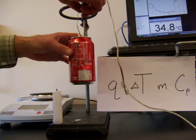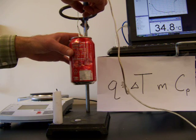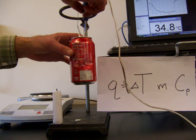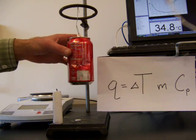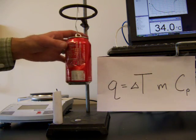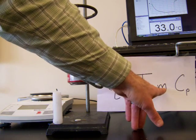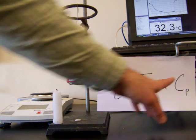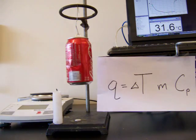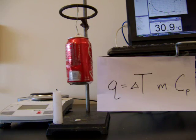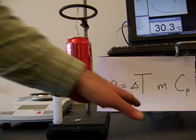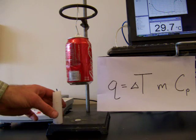Looks like our final temperature, 34.8 degrees Celsius is our final temperature of the water. So you can take the difference between the initial and final temperature of the water to figure out the temperature change. The mass is the mass of the water which was 100 grams and then the specific heat of water is 4.184 joules per gram degree Celsius. You can do that to figure out how much heat was released by the combustion of this paraffin.